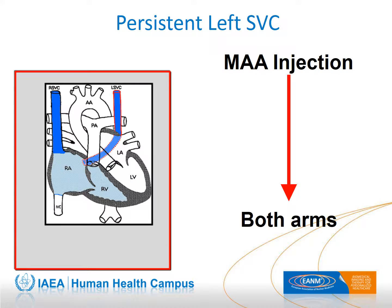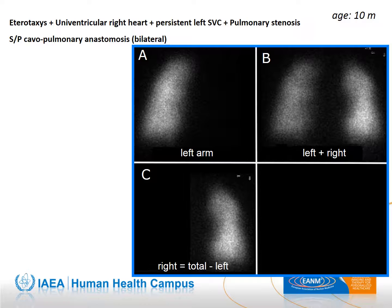This drawing represents schematically a left persistent superior vena cava. In this case, the injected particles tend to visualize the homolateral lung. Therefore, it is convenient to inject a split dose in both arms. Image A shows activity only in the left lung after injection in the left arm. Image B shows the right lung appearing only after injection in the right arm. Image C is a subtraction image — image B minus image A — showing the distribution of the second injection only.